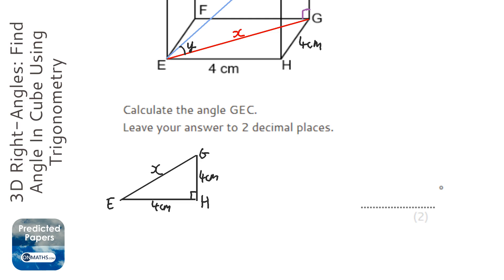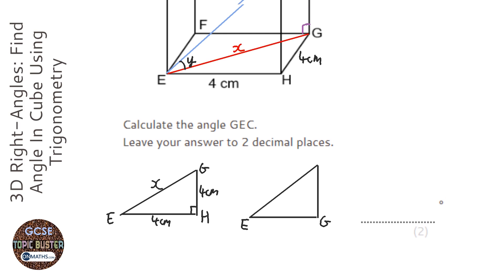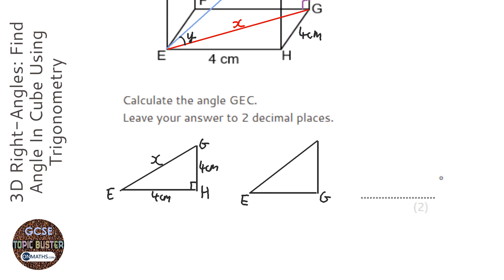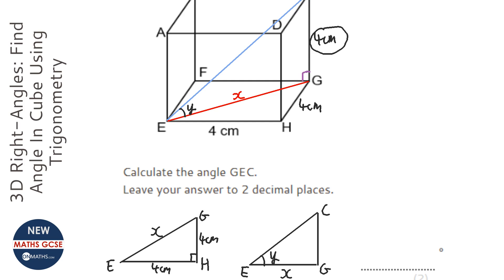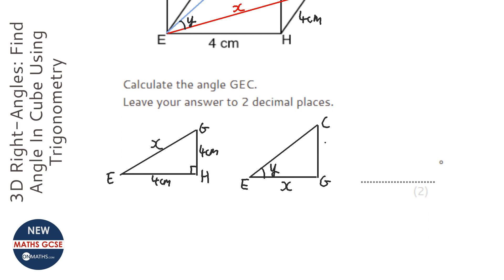Then the second triangle we're using: this is E, this is G, and at the top there, we call this angle y. This bottom one is going to be x, and you can see here that the height of that is 4cm.